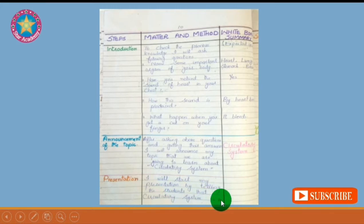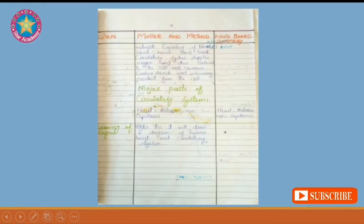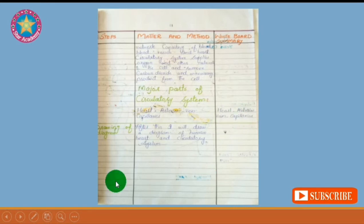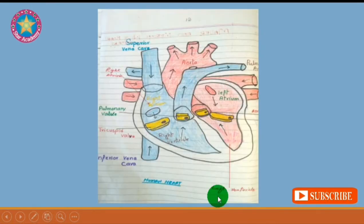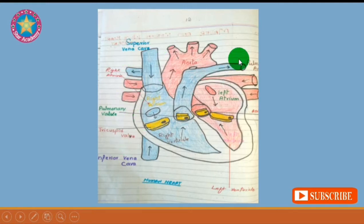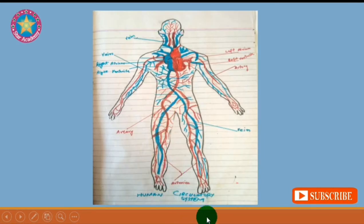After announcing your topic you will start your presentation. Here are the steps, matter and method, and whiteboard summary. Write some major parts of the circulatory system on the whiteboard. After this, draw the diagram of the heart on the whiteboard, color its different parts to show the difference between them, label them, and then ask your students to identify them.